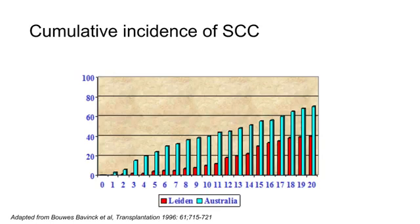Here, we see the cumulative incidence of squamous cell carcinoma in the Netherlands and Australia. The x-axis shows the years after transplantation, and the y-axis the cumulative incidence of skin cancer. The red bars indicate the Dutch, and the blue bars the Australian patients. We can see that the cumulative incidence in the Netherlands is 10% at 10 years after transplantation, and 40% at 20 years after transplantation. In Australia, this incidence is even much higher, as you can see.